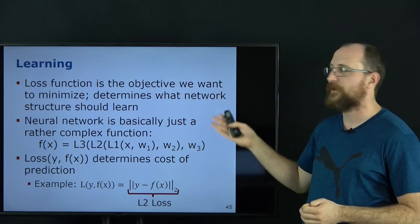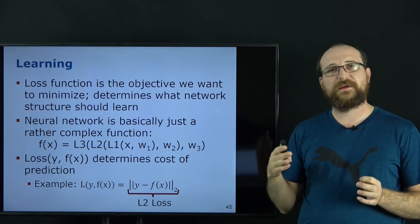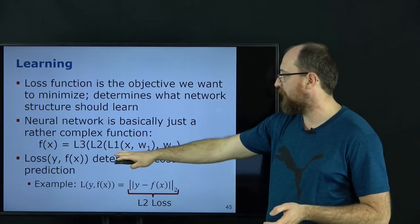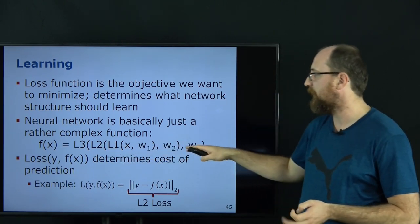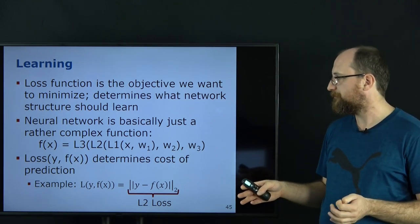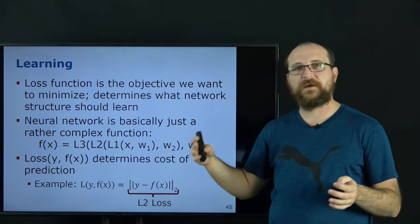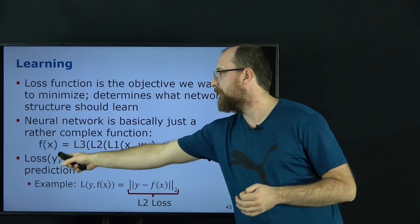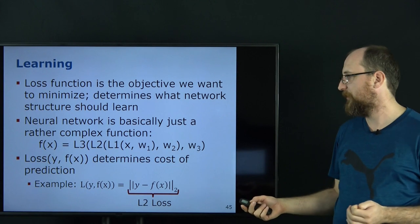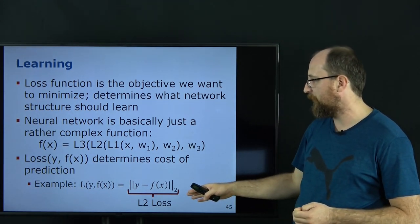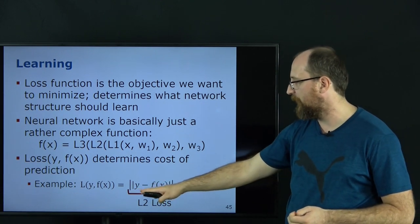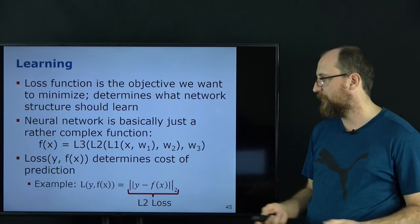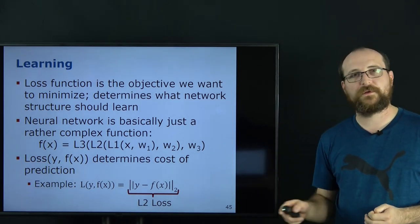For the actual region proposal extraction, the sliding window approach is inefficient: most windows cover areas with no objects, requiring classification of many empty regions. Additionally, object size and aspect ratio vary, making it unwieldy to handle all scales with a sliding window. One good idea was selective search: a hierarchical aggregation of superpixels. The entire image is passed through an approach that produces superpixels — regions sharing similarity in color or gradient space. Similar adjacent regions are progressively aggregated, and bounding boxes are produced for each merged region, efficiently generating a small number of object proposals.